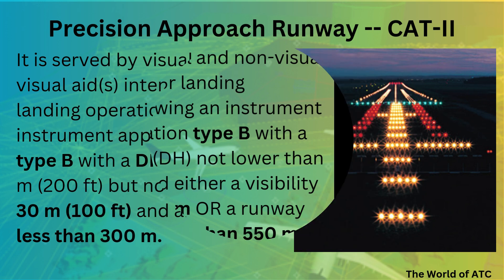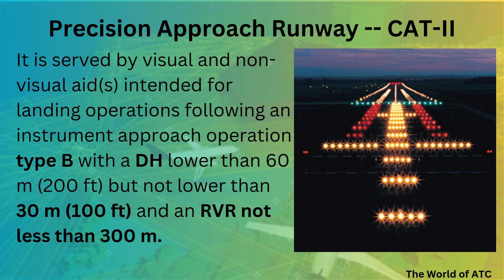Moving on to the precision approach runway CAT-2. In this case it is again intended for operations type B, with a decision height in between 100 to 200 feet and an RVR not less than 300 meters.